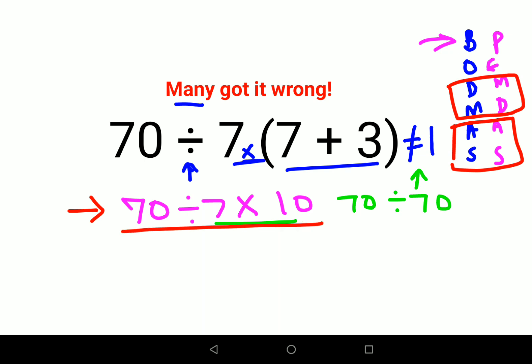So first you will do 70 divided by 7, that gets you the answer as 10, and then you multiply this answer with the rest, which is into again 10. So final answer for this one is 100.